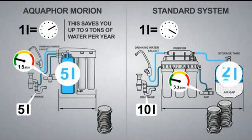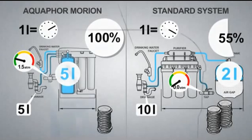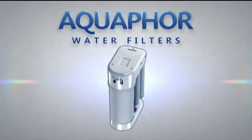Aquaphor Morion gives you the best all-round performance. Morion's effectiveness is 100 percent, while that of typical reverse osmosis systems is just 55 percent. Aquaphor Morion: a smart choice for your home and your health.